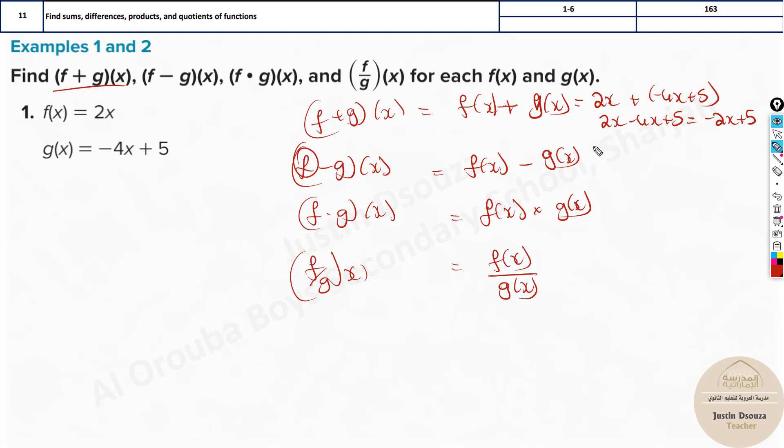Same thing can be done for minus. It will be 2x minus of f of, minus f of x plus 5. Just this plus becomes minus. That will be 2x plus 4x, minus times minus is plus and minus 5. That is 6x minus 5.